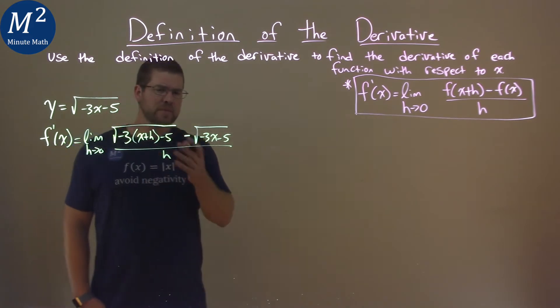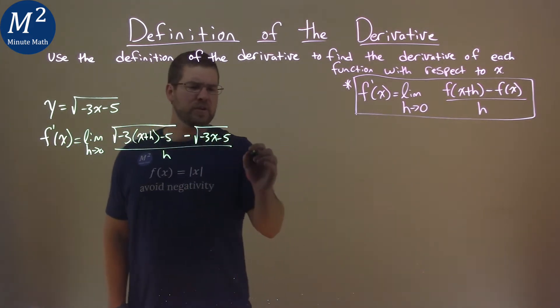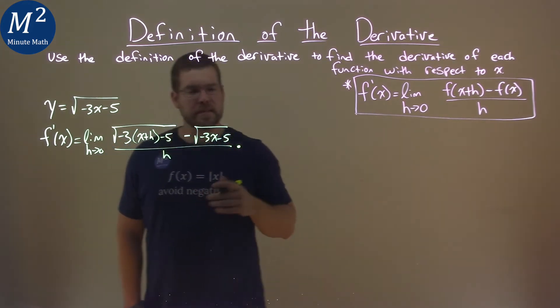Now, this one's kind of tricky. We're trying to simplify, we're trying to get an h out of the denominator. And so, to do that, what I'm going to do is actually multiply this by the conjugate over itself.